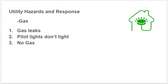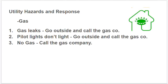For utility and gas problems, the main issues are a gas leak, pilot lights that don't light, or no gas. For a gas leak, call your gas company, but do not use your cell phone in a room filled with gas, and do not stay in a building filled with gas. For pilot lights that don't light, go outside and call the gas company — you don't know if gas is leaking, and if the pilot light does ignite it could be a problem.